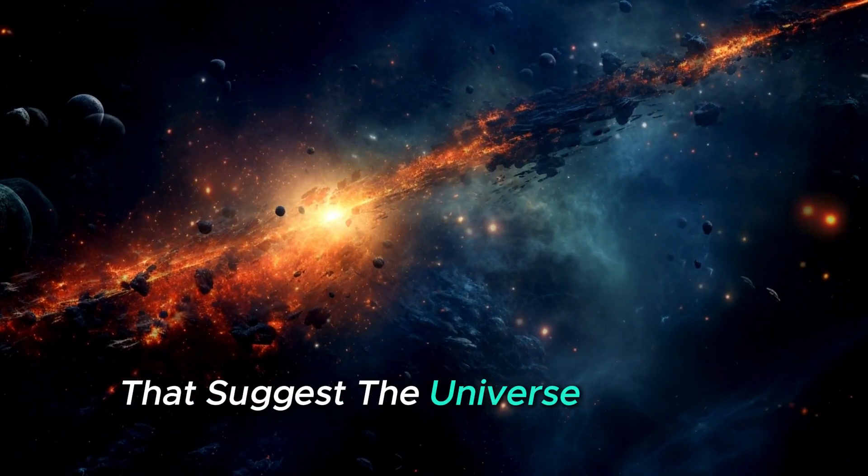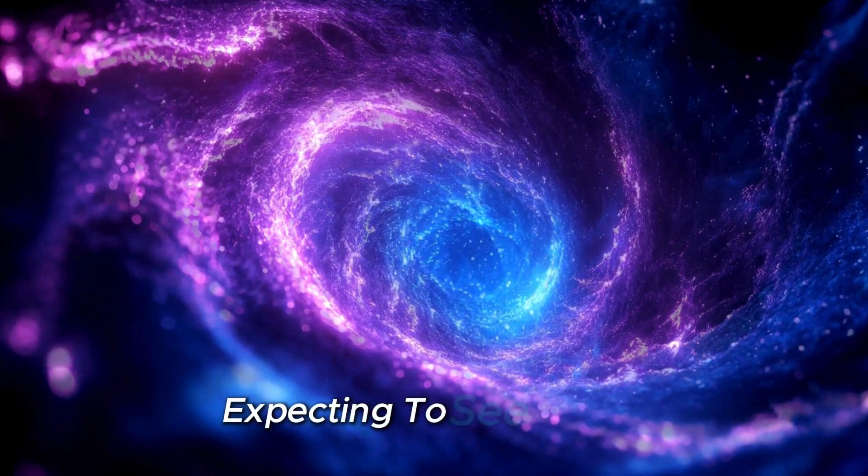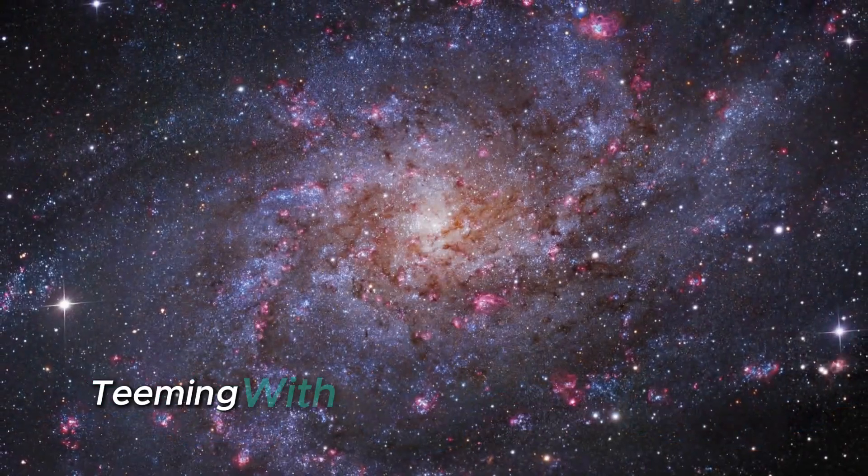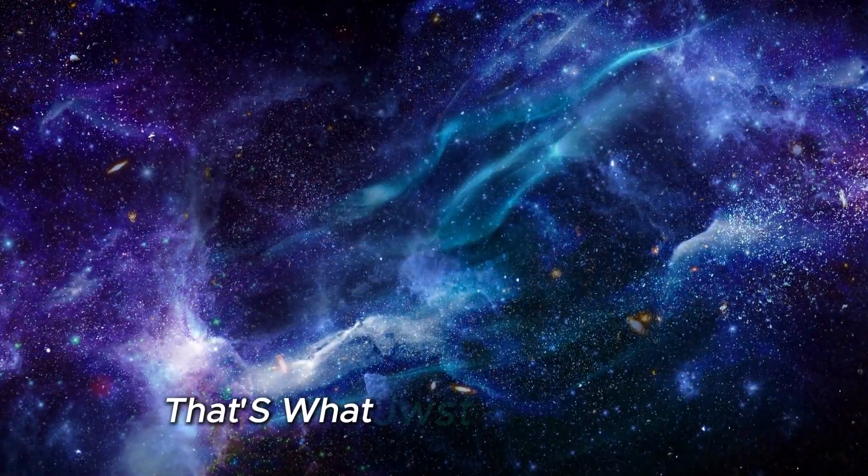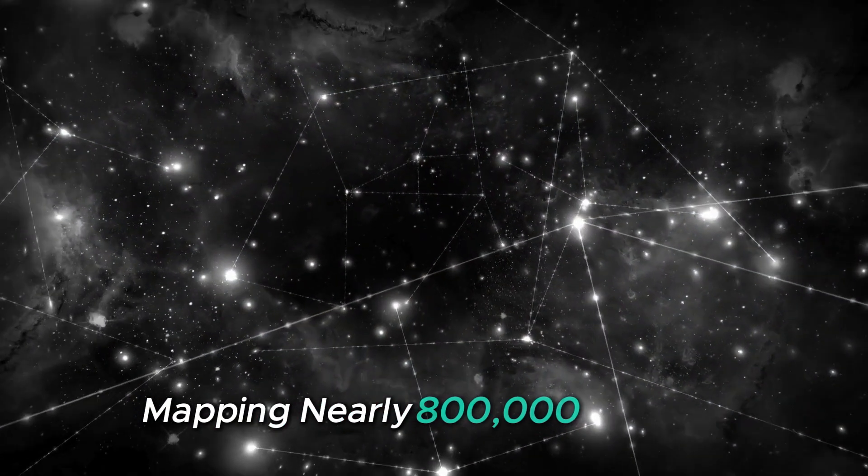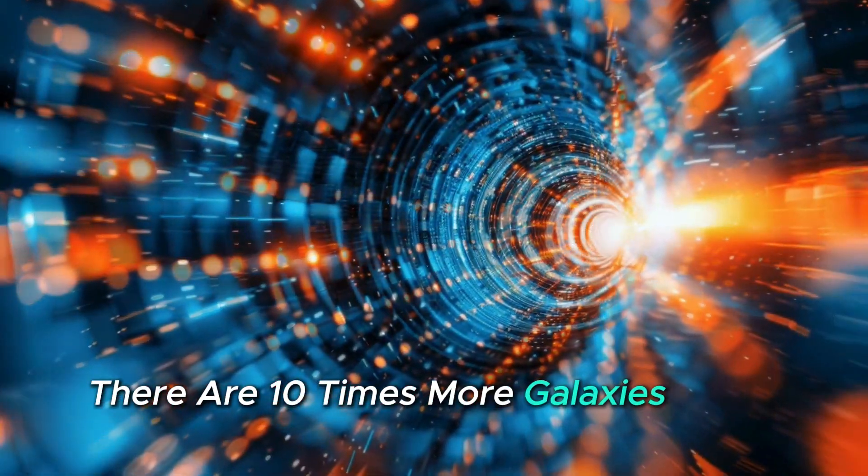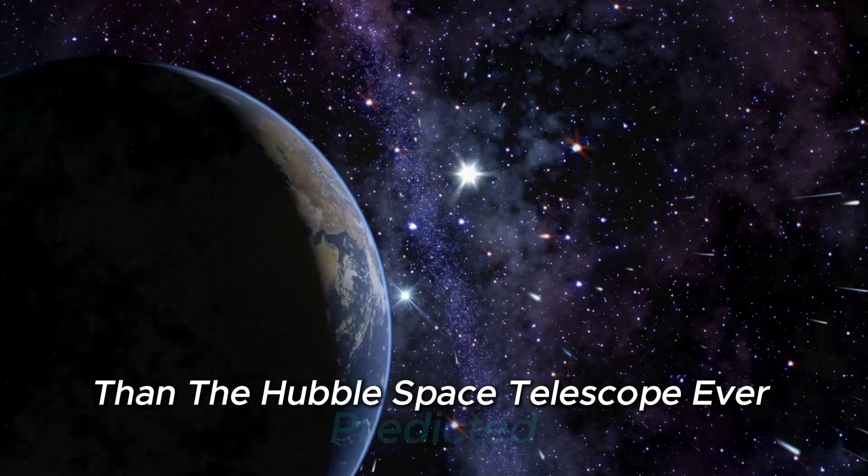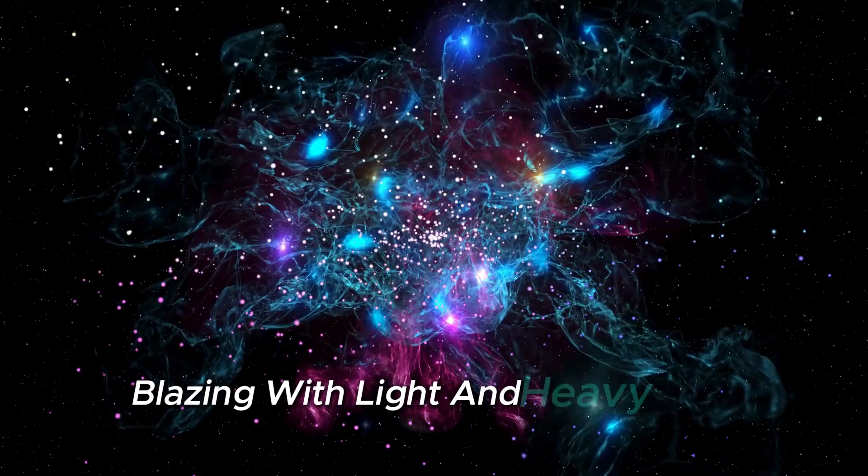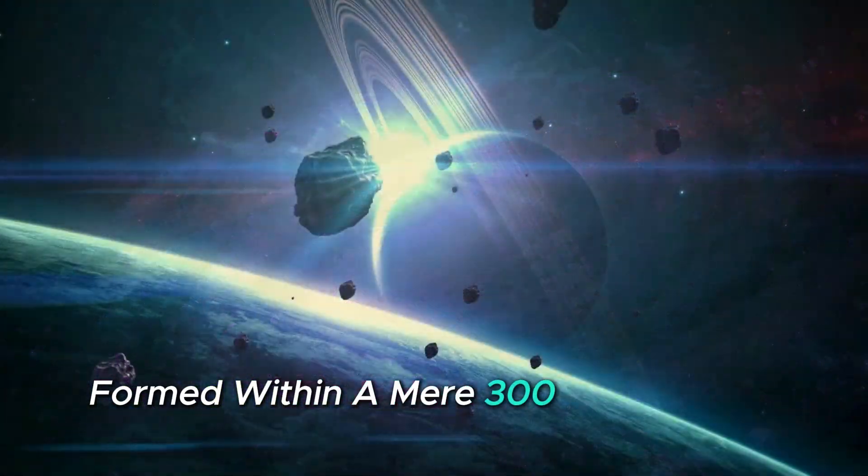Hints of a symmetry that suggests the universe isn't the uniform bubble we thought it was. Imagine standing at the edge of a cliff, expecting to see a vast empty plain stretching into infinity. Instead, you find a chaotic cityscape teeming with towering structures that shouldn't exist. That's what JWST has revealed. The Cosmos Web Survey, a groundbreaking project mapping nearly 800,000 galaxies in unprecedented detail, has shown there are 10 times more galaxies in the early universe than the Hubble Space Telescope ever predicted.